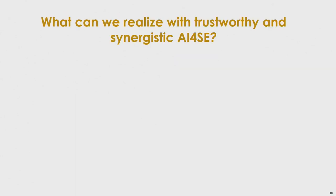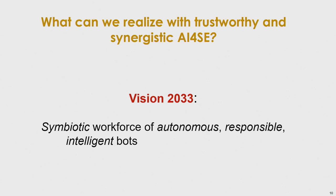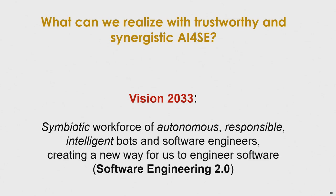Let's say we have trustworthy and synergistic AI for software engineering. Let me put forward Vision 2033 — 10 years from now. I think in 10 years we can possibly have a symbiotic workforce consisting of two elements: autonomous, responsible, and intelligent bots, working synergistically with software engineers. This will be a new way to engineer software — Software Engineering 2.0.